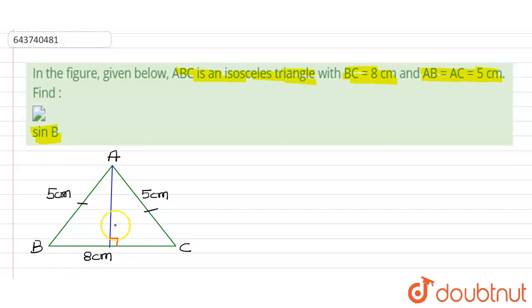If we drop a perpendicular, it divides BC into equal parts. Let's name this point D. So BD equals DC equals 4 centimeters.